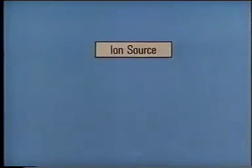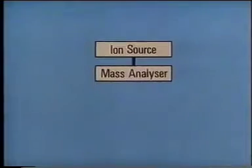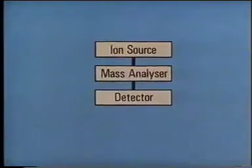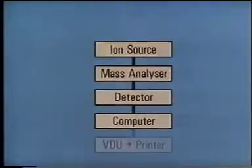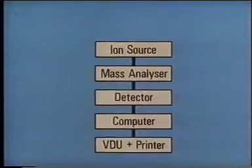The basis of mass spectrometry is the production of ions from compounds and the observation of the subsequent decomposition of those ions. So let's see what's needed to record a mass spectrum. We need a method for ionising the molecules, a means of separating the resulting ions according to their mass, a detector for the separated ions, a device for acquiring and processing the spectral data, and finally a means of displaying the results and communicating with the computer.